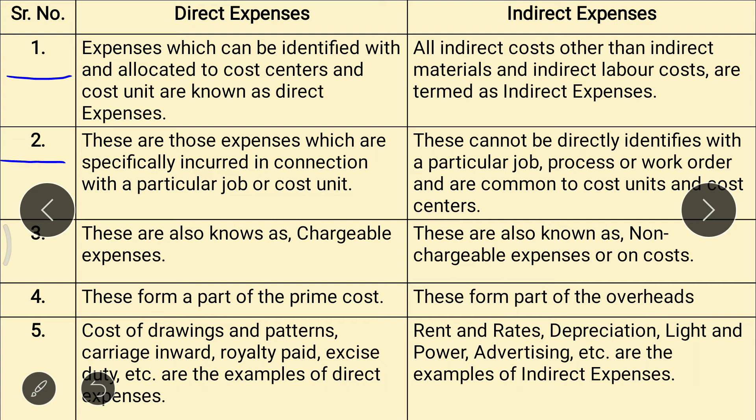Second point: direct expenses are those expenses which are specifically incurred in connection with a particular job or cost unit. In case of indirect expenses, these cannot be directly identified with a particular job, process, or work order, and are common to cost units and cost centers.